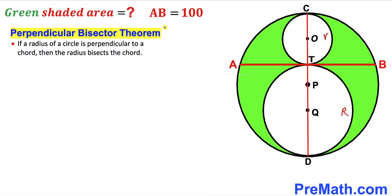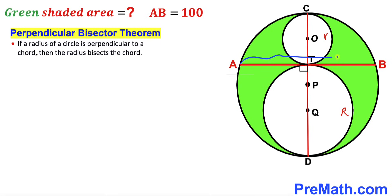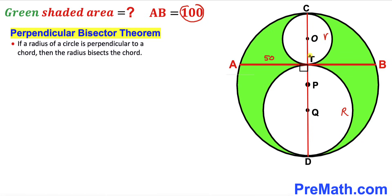Let's recall the perpendicular bisector theorem: if a radius of a circle is perpendicular to a chord, then the radius bisects the chord. We can see that this radius is perpendicular to chord AB. Therefore, segment AT equals segment TB, and each equals half of 100, which is 50 units.